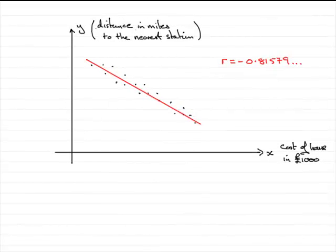Now this part of the question, we're told that the family do not want the distance to be measured in miles, but in kilometers. So what effect would that have on the product moment correlation coefficient?